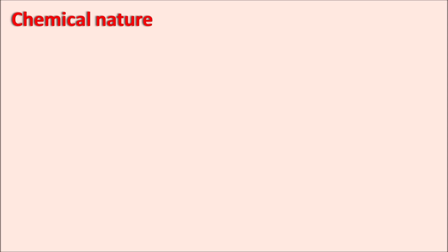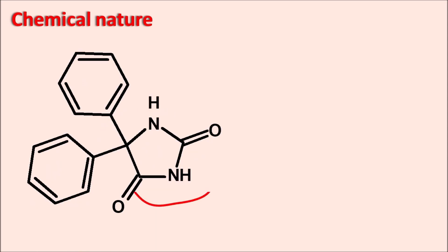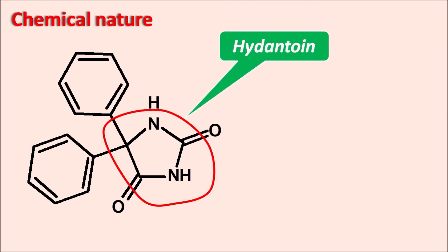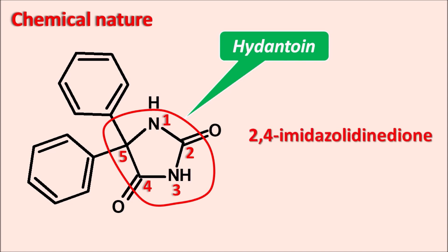Phenytoin has a hydantoin ring system. Giving the numbering 1, 2, 3, 4 and 5 — this hydantoin has two phenyl rings at the 5th position. For the IUPAC name, hydantoin is considered an imidazolidine derivative with ketone groups at the 2nd and 4th positions, written as 2,4-imidazolidinedione with phenyl rings at the 5th position. So phenytoin is 5,5-diphenyl-2,4-imidazolidinedione.